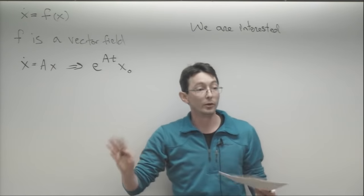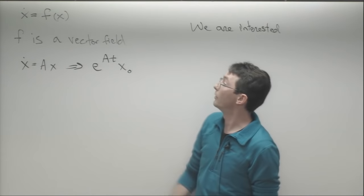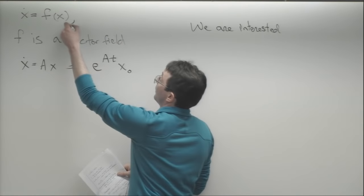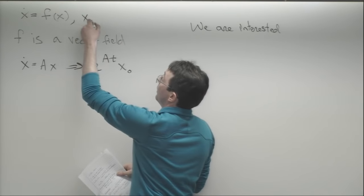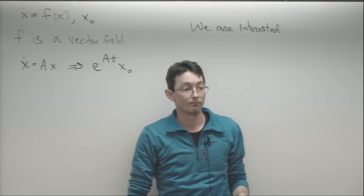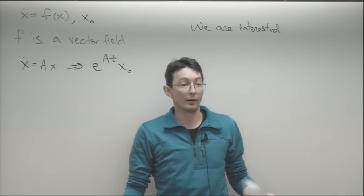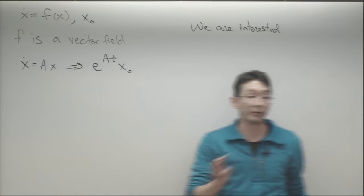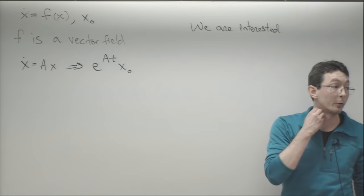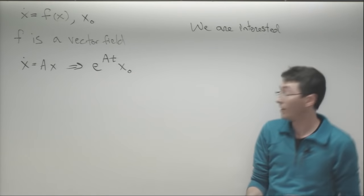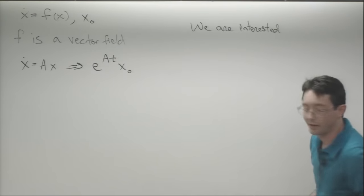For a linear system x dot equals Ax, we can handle the implicit case. We write x k+1 equals x k plus delta t A x k+1, which rearranges to identity minus delta t A times x k+1 equals x k. Then we can invert that matrix to get x k+1 equals identity minus delta t A inverse times x k. Taking a matrix inverse is more expensive than just multiplying two matrices, but this gives better stability.